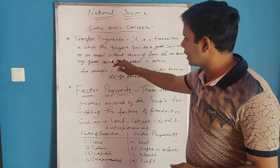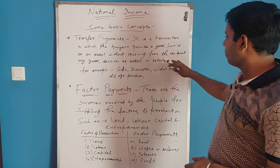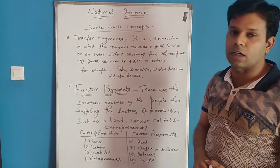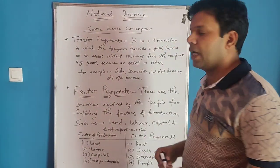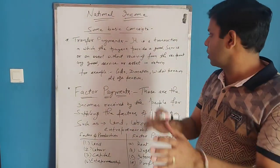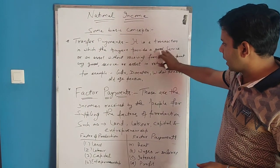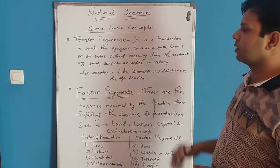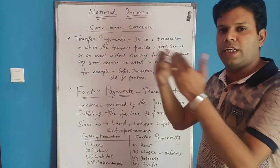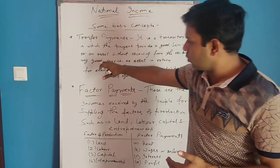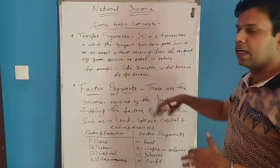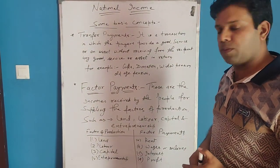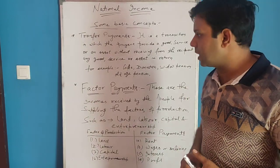Factor payments kya hai — agar koi person kisi doosre person ko koi good de raha hai, koi services provide kar raha hai, ya assets de raha hai without receiving anything in return. Recipient se na toh koi good le raha hai, na service le raha hai, na assets le raha hai, na koi money uski against le raha hai. Transfer payments we can also say it as a one-sided transaction, one-sided payment.